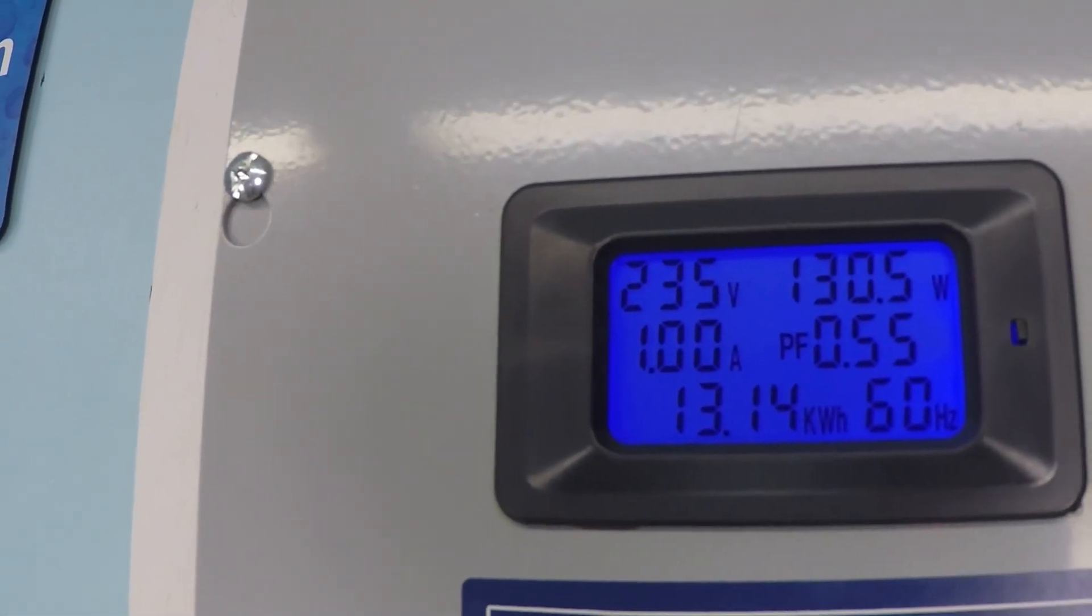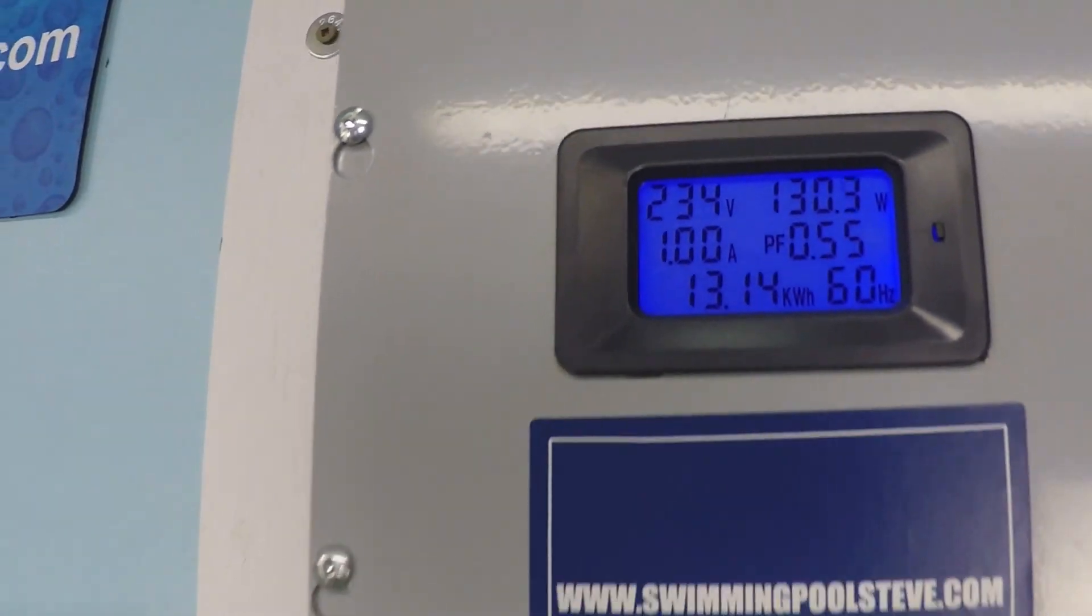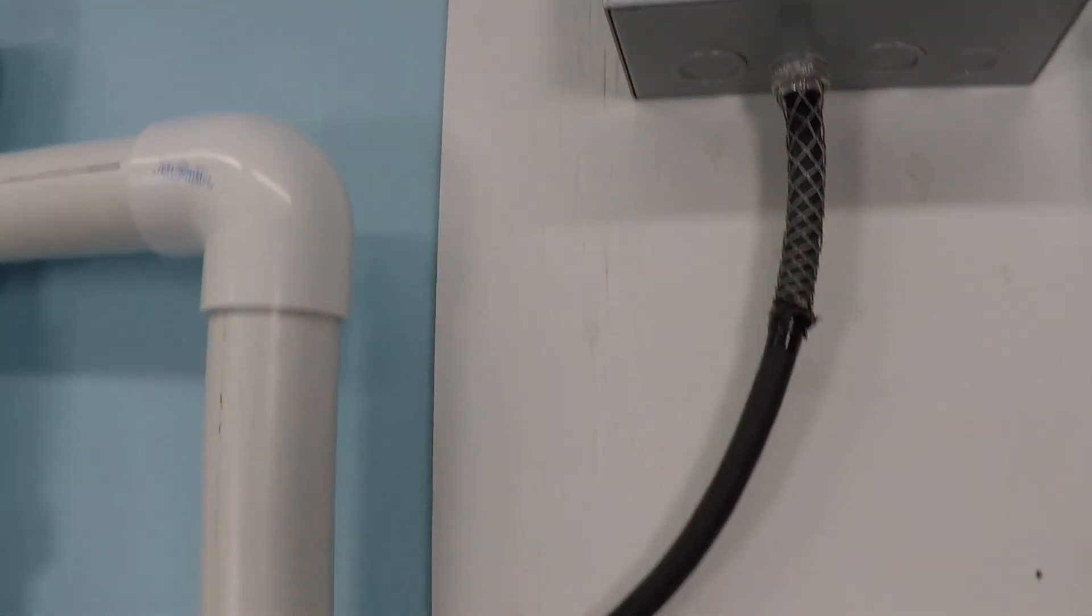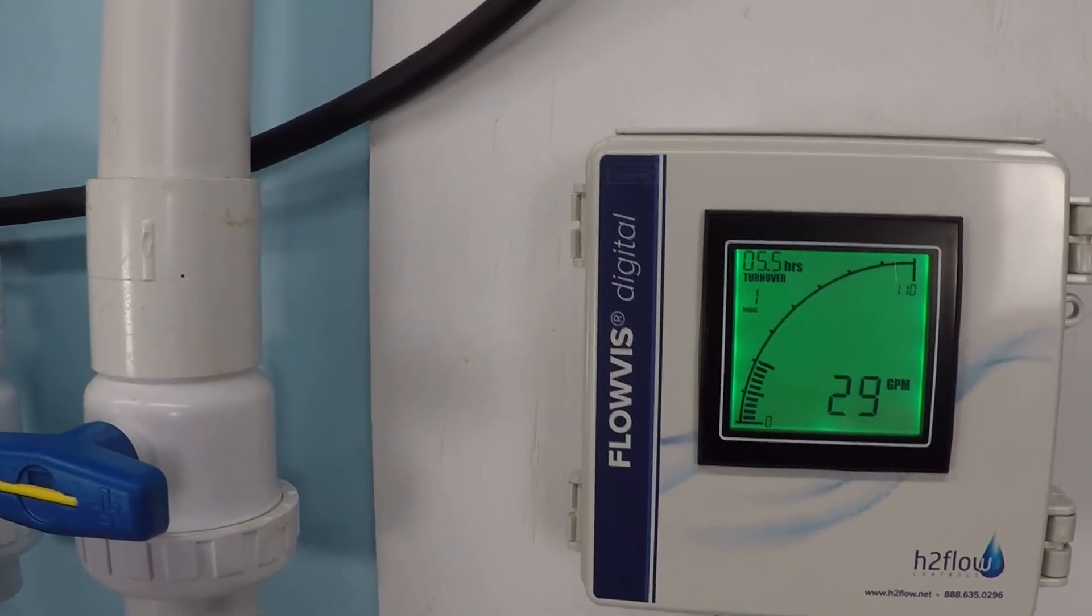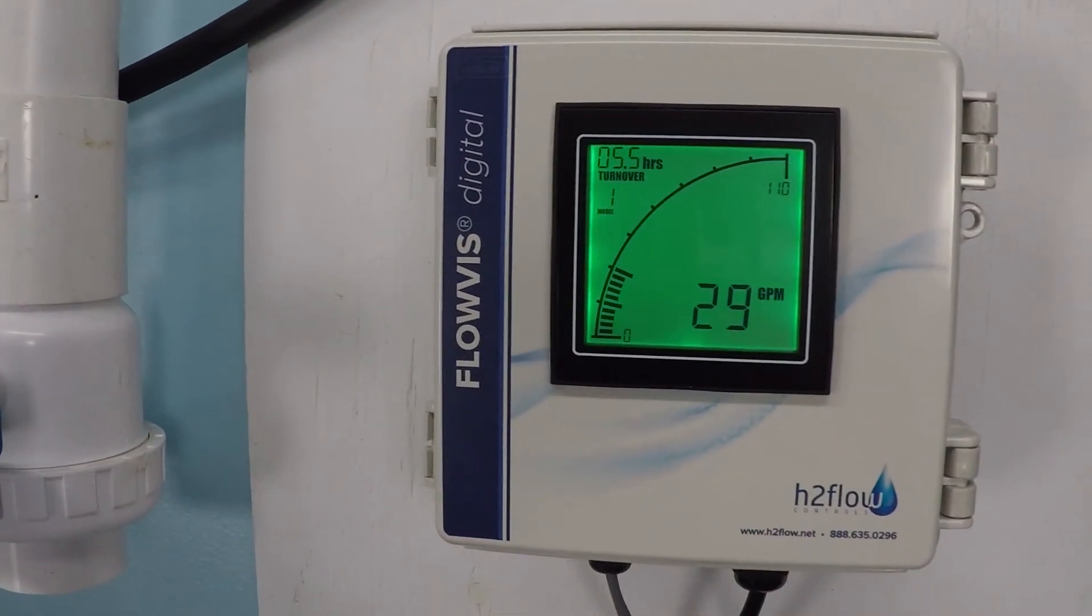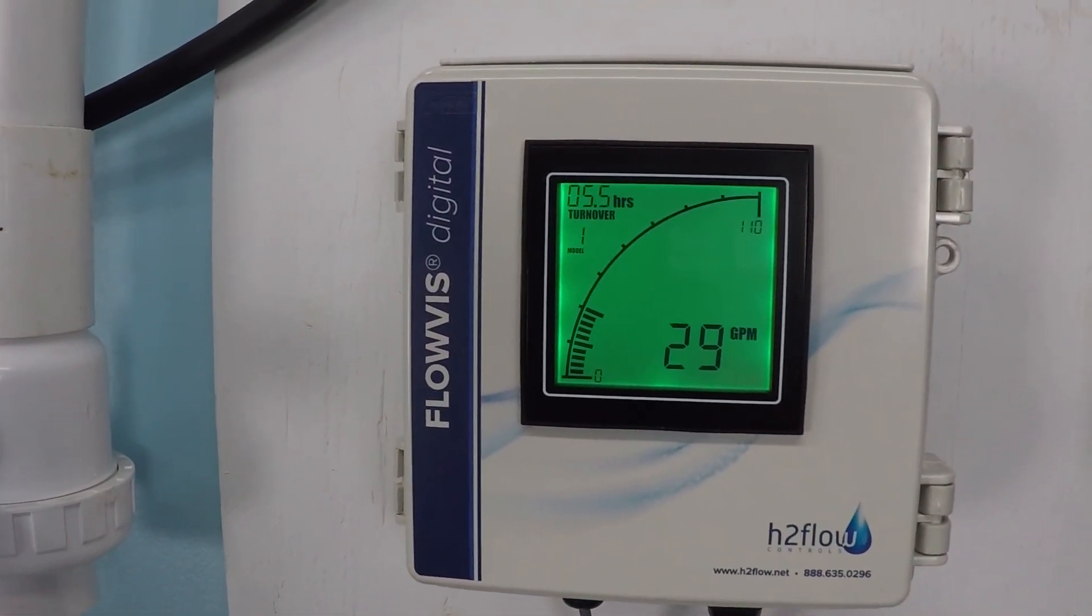Now it's important to remember that these numbers will be different for each and every swimming pool system. Every pool is unique, but this just gives you an idea of how beneficial something like a variable speed pool pump can be.